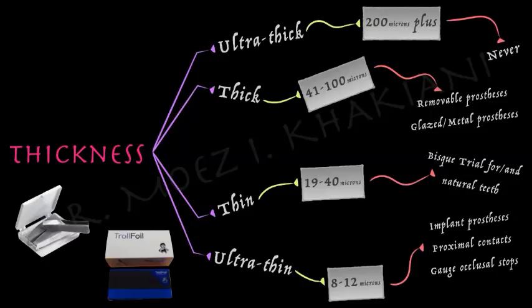The last point is gauging occlusal stops, where a shim stock is used. A shim stock is not an articulating paper — it is metallic and doesn't transfer marks — but it helps you gauge whether contacts are present or not. I am putting up a link to one of my YouTube videos on this topic; you can watch that and come back to this video.